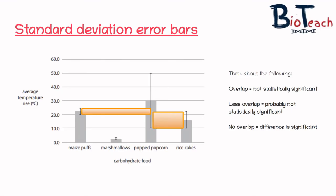And finally, when the standard deviation error bars don't overlap at all — like in the case of maize puffs and marshmallows, marshmallows and the popcorn, and marshmallows and the rice cakes — that's a clue to you that the difference may be significant, but you cannot be sure. In order to be sure, you have to perform a statistical test.